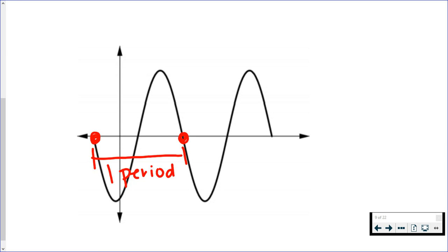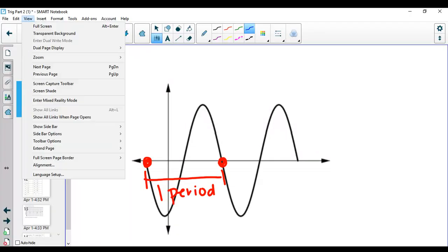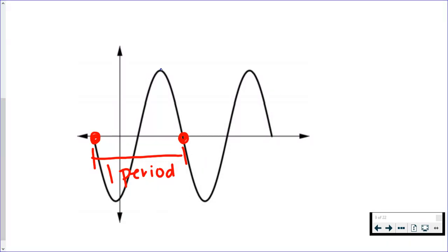You didn't have to choose those two points. You could have started at the top of one of those hills. So let's say we start right here. You trace the graph. Once you get back to that same point up top, that would be one period.